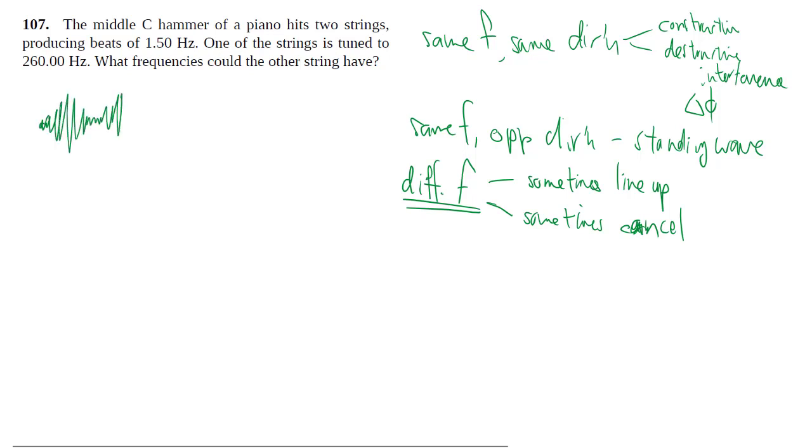As a result, you end up making a pattern that looks like this. Sometimes they add up, sometimes they cancel out, then they add up again and cancel out. What you get is this kind of envelope that is sometimes loud, sometimes soft, sometimes loud, sometimes soft.